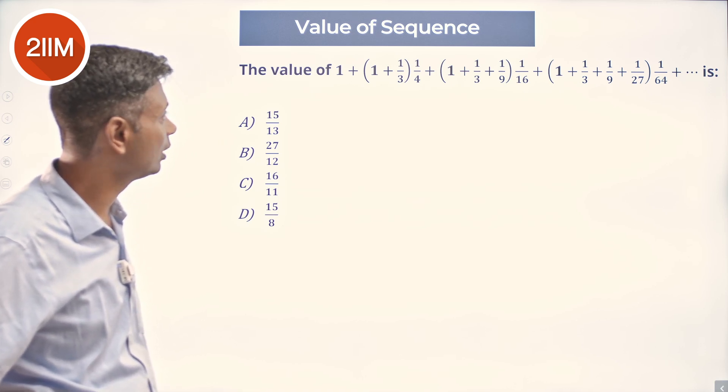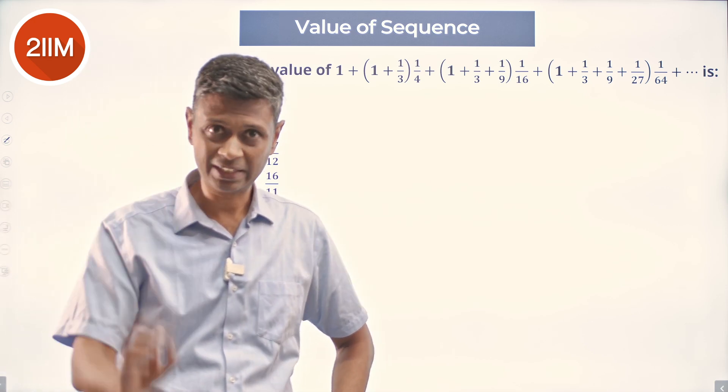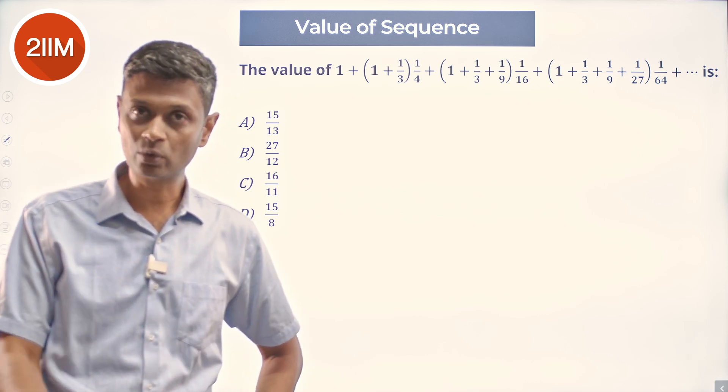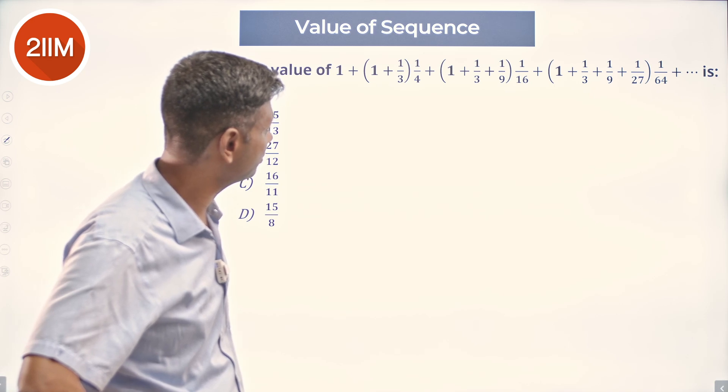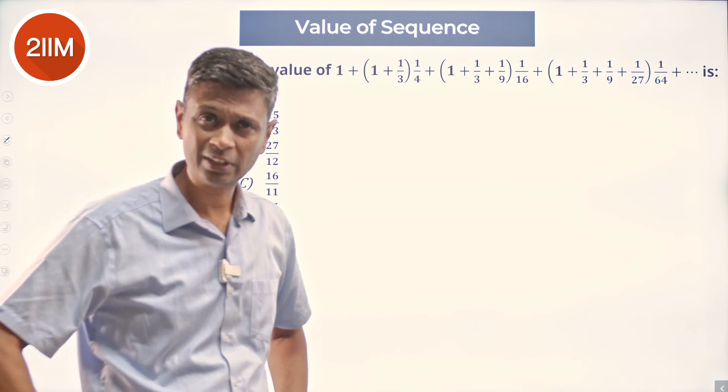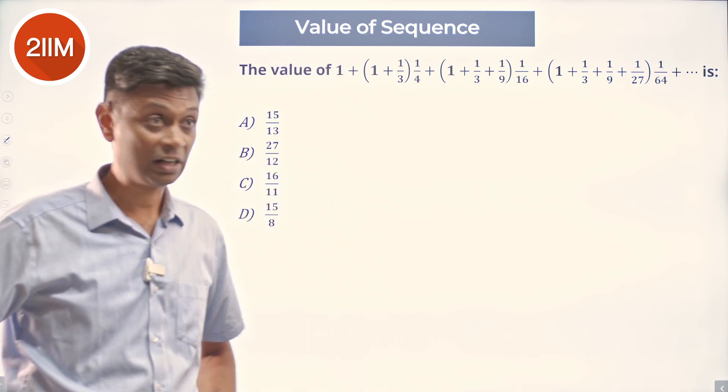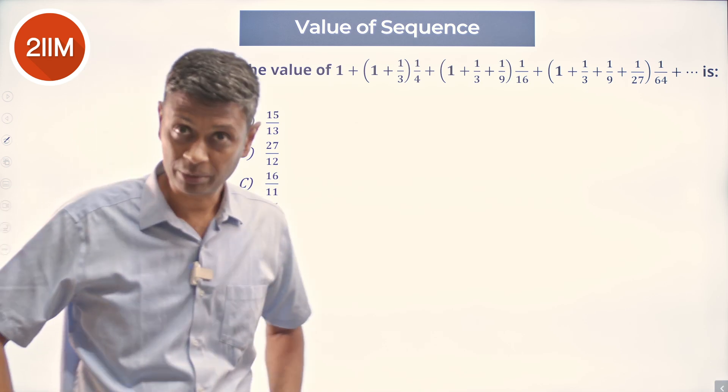We need to figure out a way. There is a GP inside which another progression has been tagged on. So, 1 plus 1/3 is 4/3, 4/3 into 1/4 is 1/3. 1 plus 1/3 plus 1/9, figure that out: 9 plus 3 plus 1 is 13/9 into 1/16. Not very friendly. I thought numbers would get cancelled and give us something very sweet, but that is not happening.